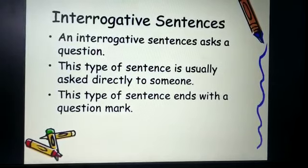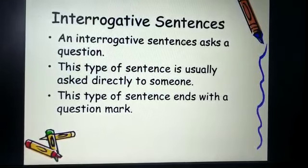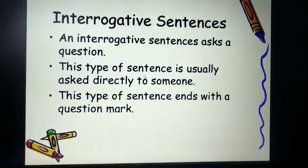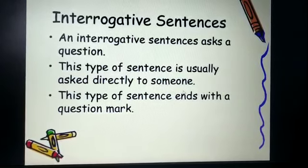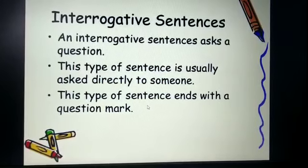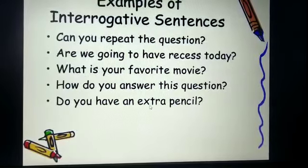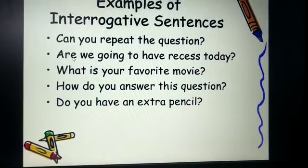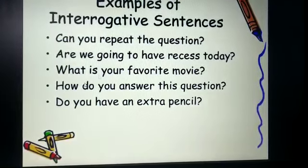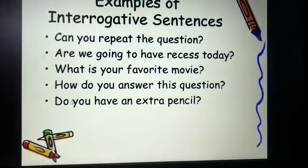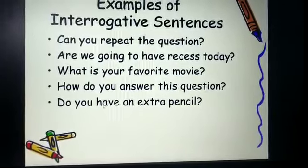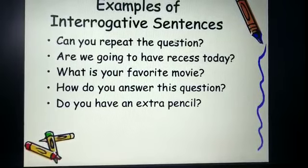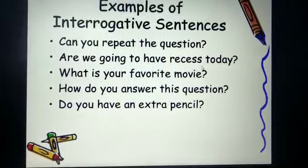Next we come to interrogative sentences. Interrogative sentences will ask you a question. This type of sentence is usually asked directly to someone, and it always ends with a question mark. Examples of interrogative sentences are: can you repeat the question? Are we going to have recess today? What is your favorite movie? How do you answer this question? Do you have an extra pencil? So these all end with a question mark and are known as interrogative sentences.